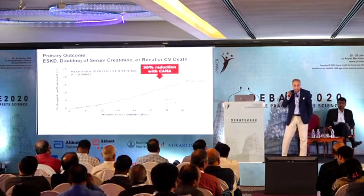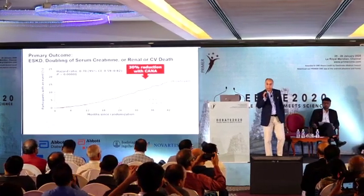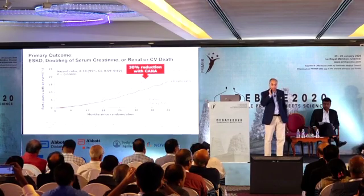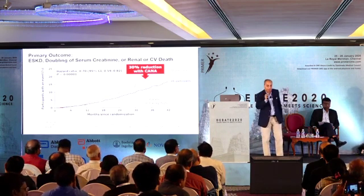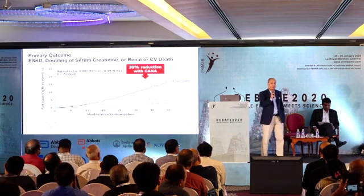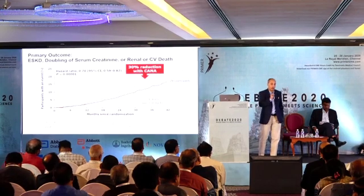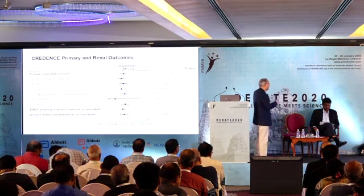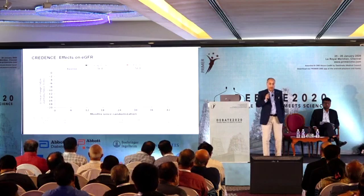The composite primary outcome in CREDENCE — consisting of progression to ESRD, doubling of serum creatinine, renal death, or cardiovascular death — was reduced by 30%. The p-value here is 0.00001, meaning there is less than a 1-in-1-million chance this is a chance finding. Compare this to the RENAAL and IDNT trials where p-values were 0.02. Individual components including progression to ESRD and doubling of serum creatinine all showed significant differences.